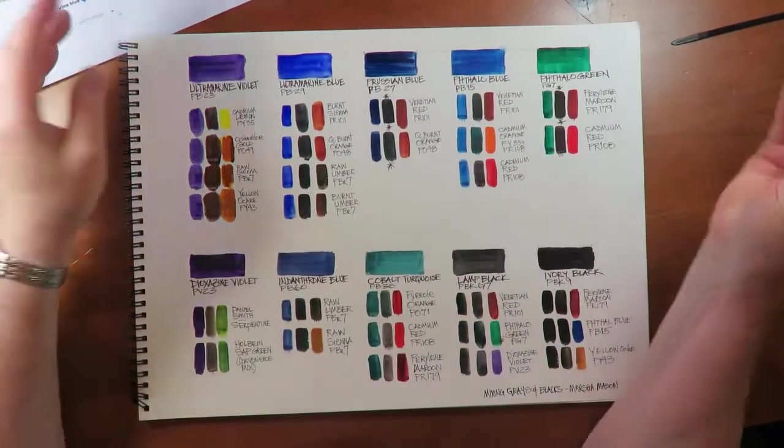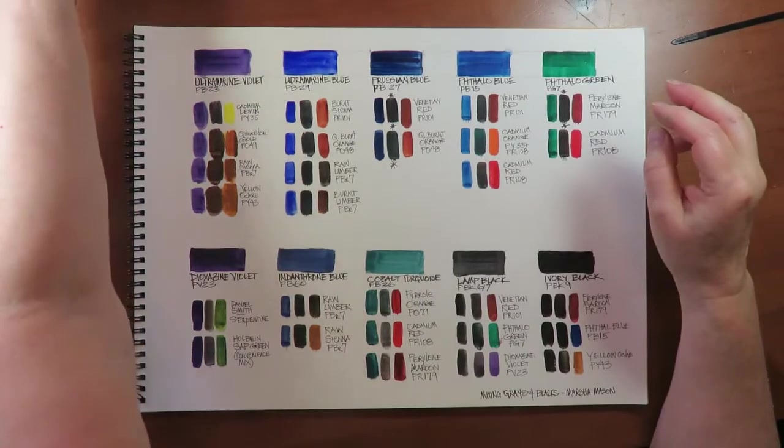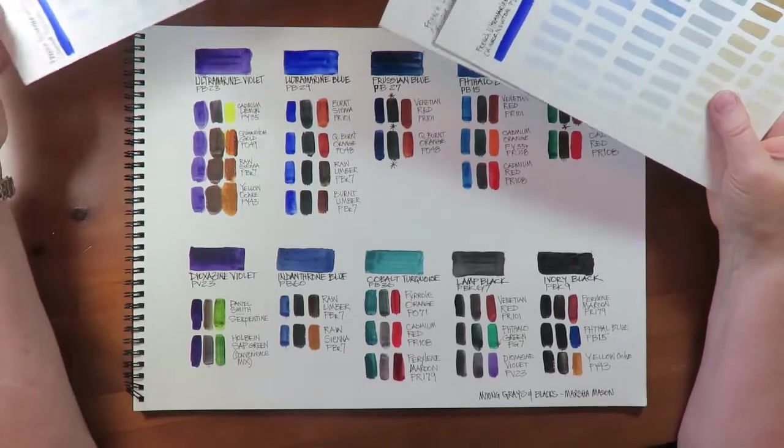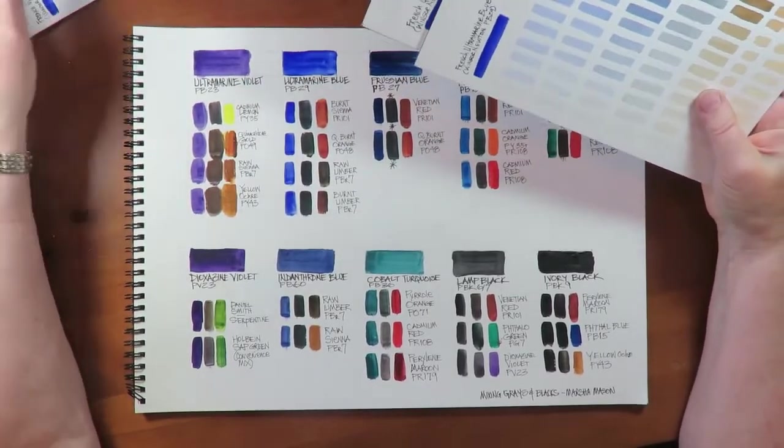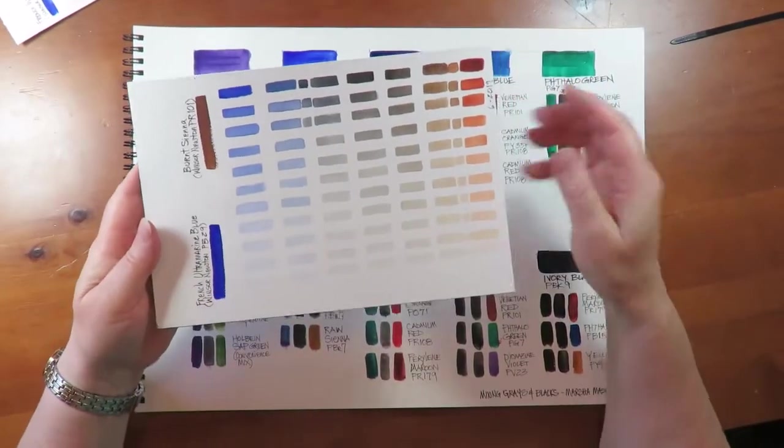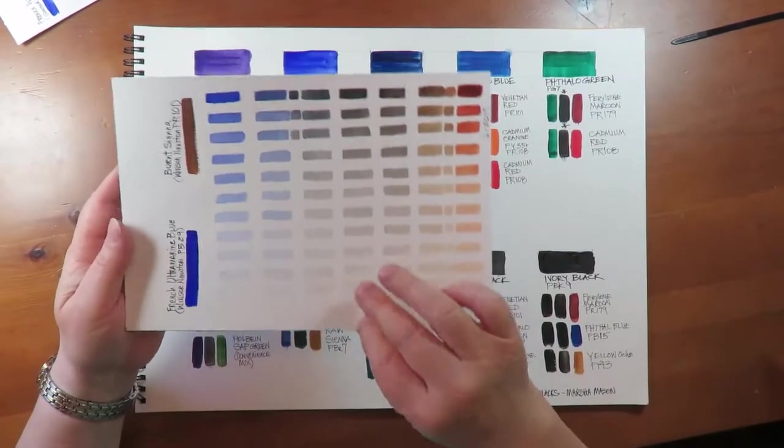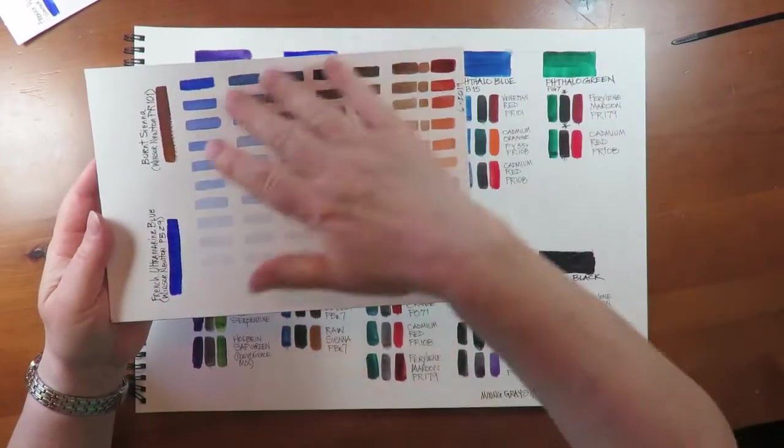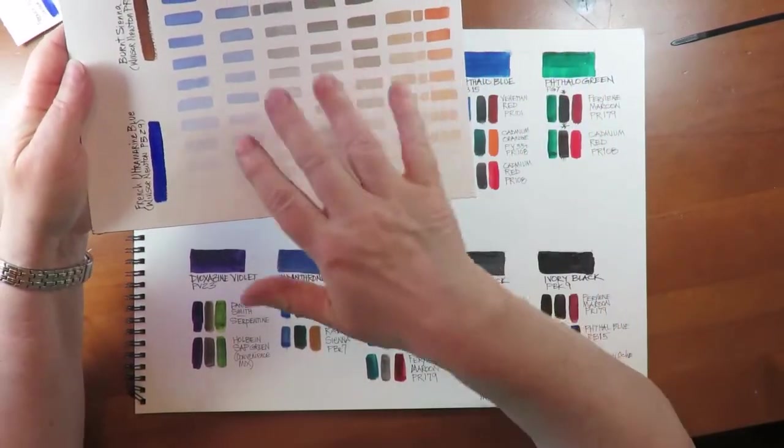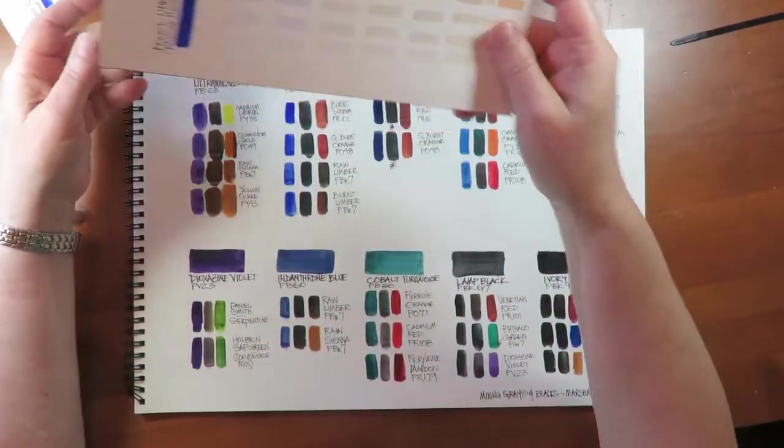Ultramarine is probably the blue I use the most, and I've done a lot of charts with the blue. My favorite black up until now is burnt sienna and French ultramarine blue. And this kind of illustrates what I'm talking about, about using the colors that are already in your painting to make blacks. There's quite an array of colors here and some beautiful grays that go into the browns and into the blues, warm and cool. It's very versatile.